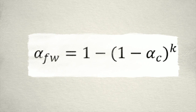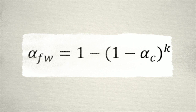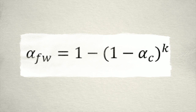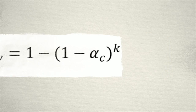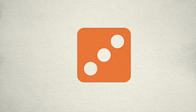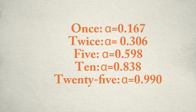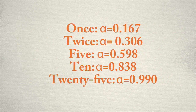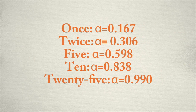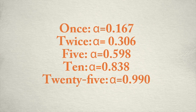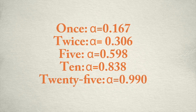The family-wise error rate can be calculated with this equation, where alpha sub c is the level of significance for one comparison, and k is the total number of comparisons being conducted. So let's go back to our dice rolls. What is the probability of rolling a three? If we roll it once, the family-wise error rate is 0.167. If you get two tries, it almost doubles to 0.306. By the time you get to 25 rolls, you are near certain to roll a three.